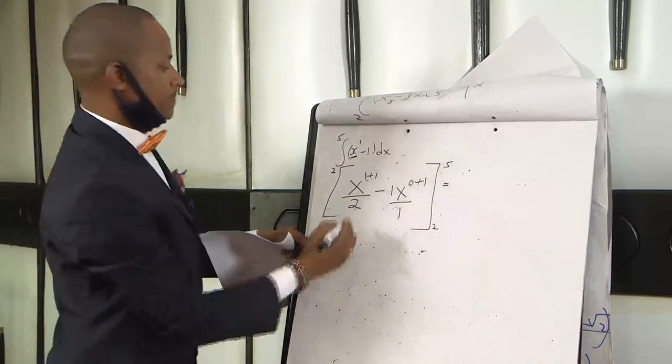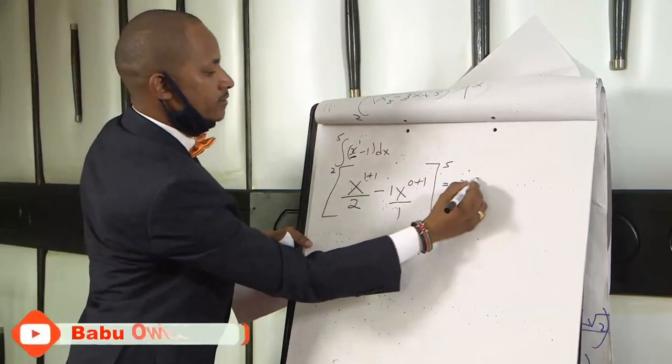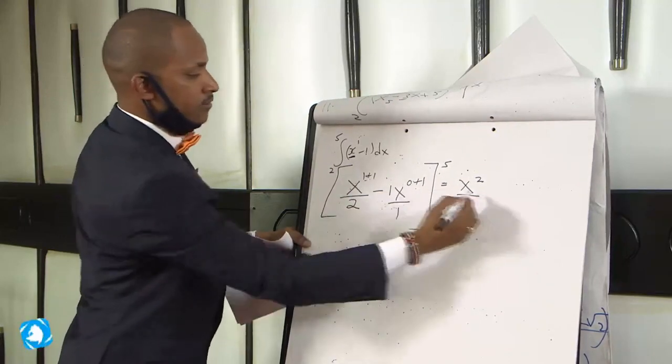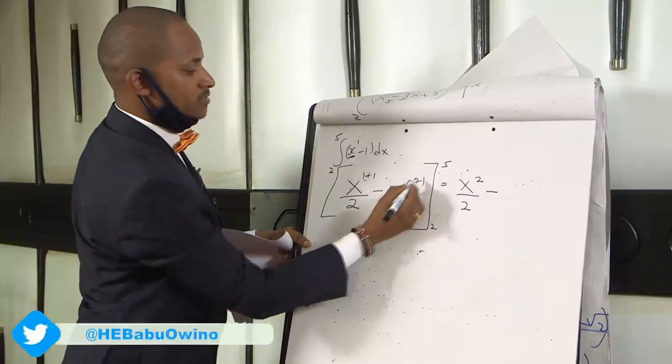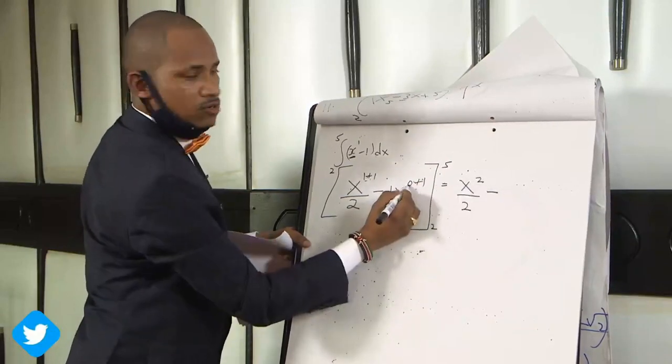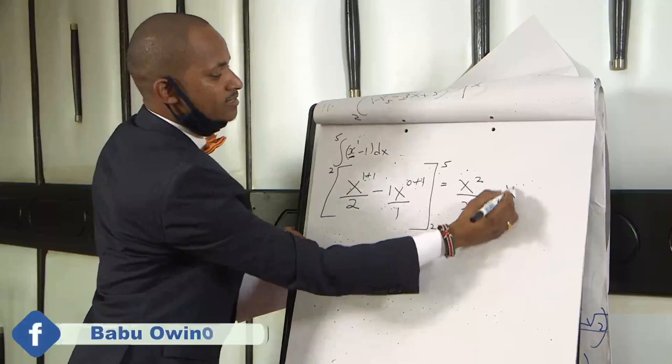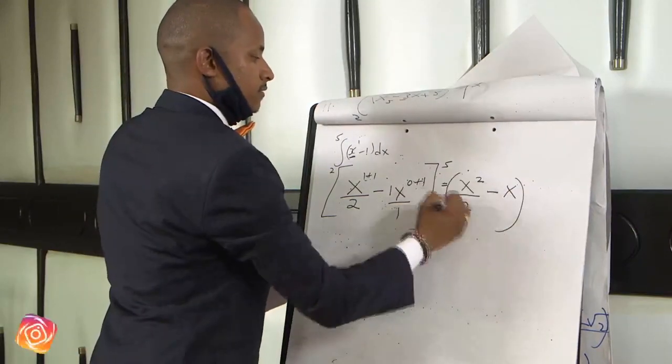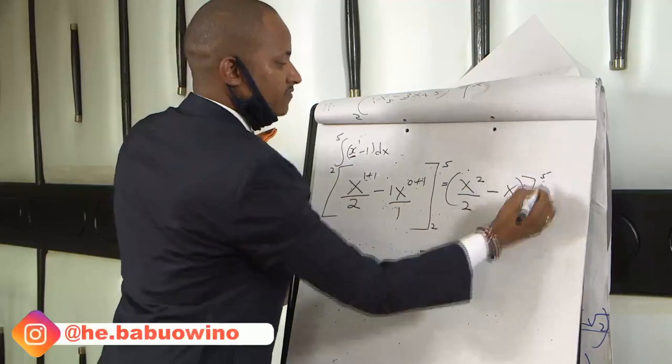This gives us x squared divided by 2 minus x raised to power 1. 0 plus 1 is 1. So therefore x power 1 is x.